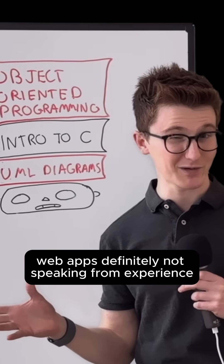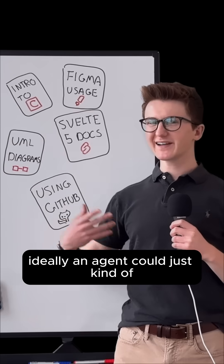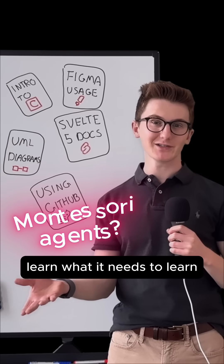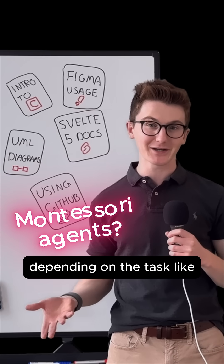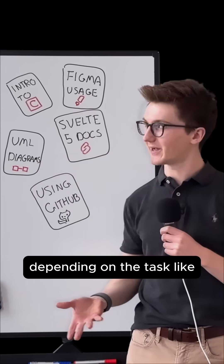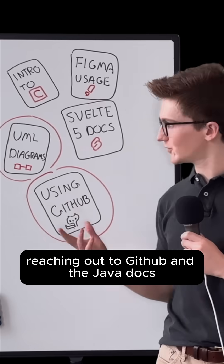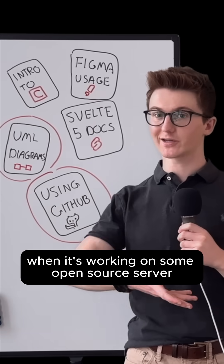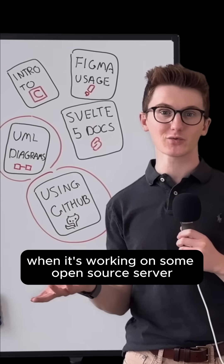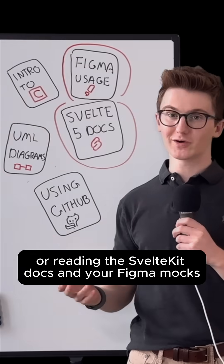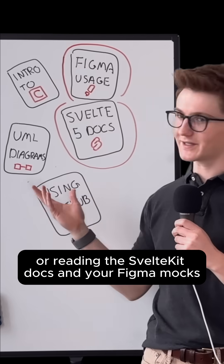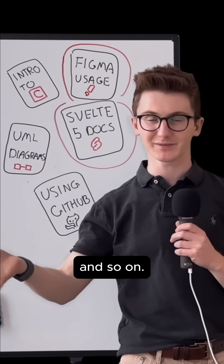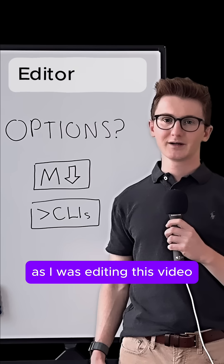Definitely not speaking from experience. Ideally, an agent could just kind of learn what it needs to learn depending on the task, like reaching out to GitHub and the Java docs when it's working on some open-source server, or reading the SvelteKit docs and your Figma mocks to build a full-stack app, and so on.